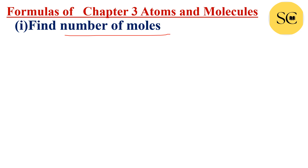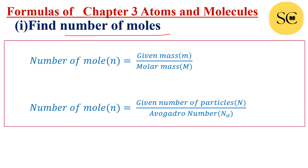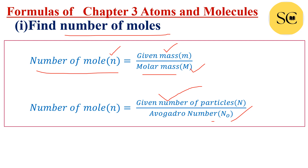Now we want to find the number of moles. Number of moles, denoted by small n, is equal to given mass (small m) upon molar mass (capital M). We can find number of moles by dividing the given mass of the substance by its molar mass. The second formula: number of moles is equal to given number of particles N divided by Avogadro number N₀.